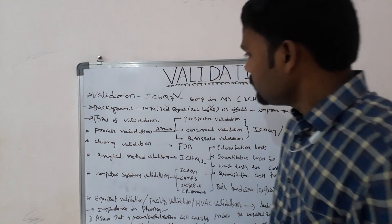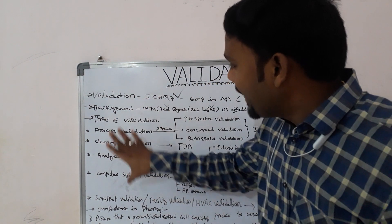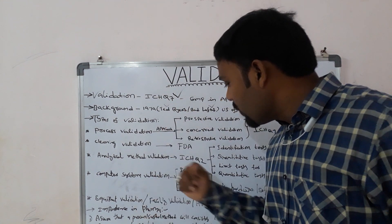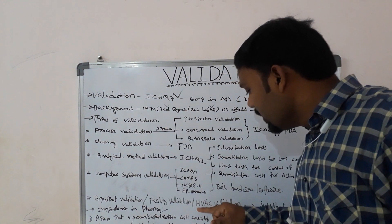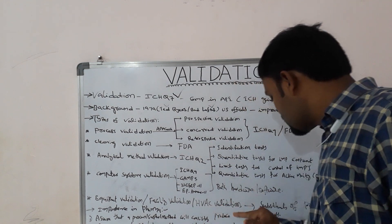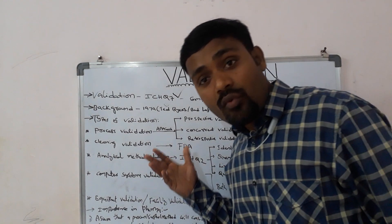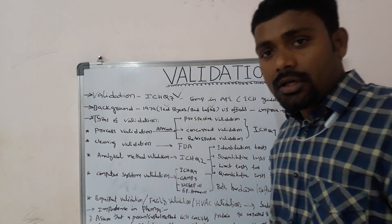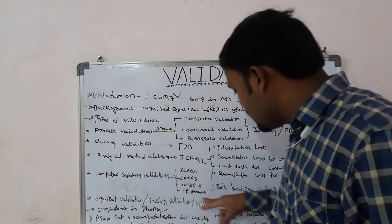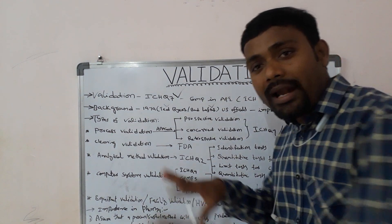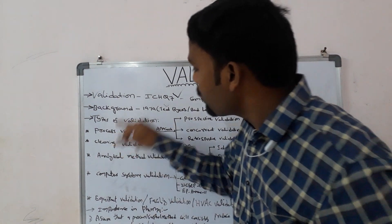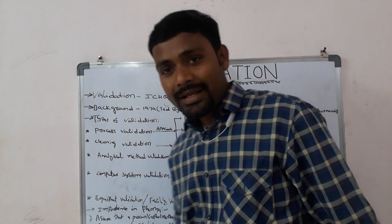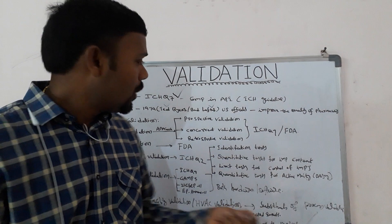Apart from these four major categories, there are additional validations such as equipment validation, facility validation, HVAC (heating, ventilation, and air conditioning) system validation, blending process validation, and drying process validation. However, equipment, facility, HVAC, blending, and drying validations are largely sub-categories of process validation. So, there are primarily four main categories of validation.